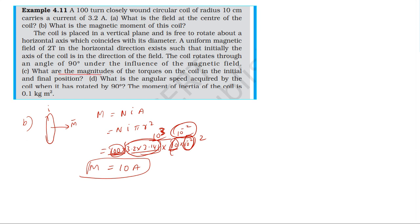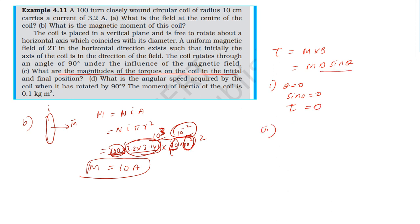What are the magnitudes of the torque acting on the coil? The formula for torque is τ = m × B × sinθ, that is m cross B. In the first case, the initial position, theta is 0 degrees. Sin(0) = 0, so torque τ = 0. In the second case, the coil rotates through 90 degrees, so theta = 90 degrees.